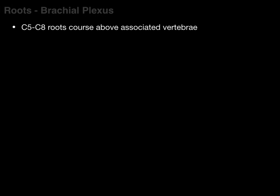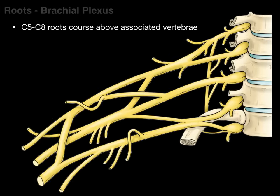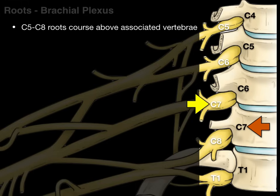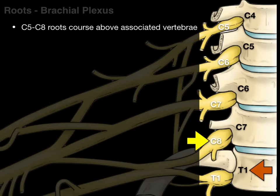The C5 to C8 roots course above their associated vertebra. There are the C5 to T1 spinal nerves and their associated vertebrae. The C5 nerve root courses above the C5 vertebra, C6 above C6, C7 above C7. Then there's this notable exception: we have eight cervical spinal nerves but only seven cervical vertebrae, so the C8 nerve courses below C7 and above T1. From T1 downward, the nerve associated with a vertebra courses below it — T1 nerve below T1 vertebra, T2 nerve below T2 vertebra. Cervical vertebrae and nerves are the exception.